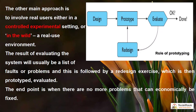Consider this role of prototyping diagram. This is an approach to involve real users either in a controlled experimental setting or in the wild. In the design process, we perform another design or requirement analysis, then we create a prototype — whether software or a paper design or storyboard — and then we evaluate it.